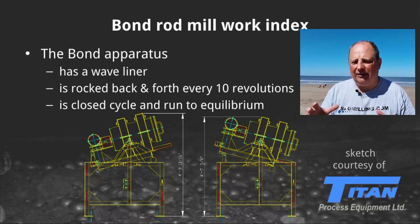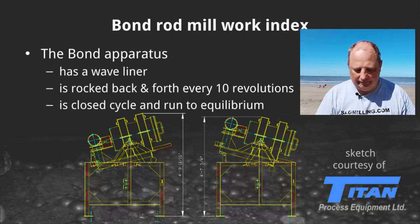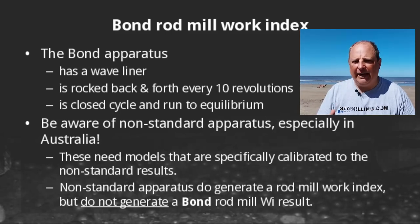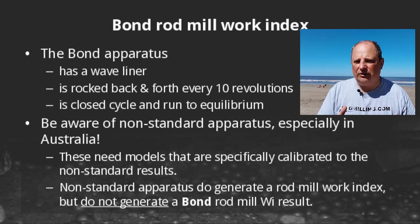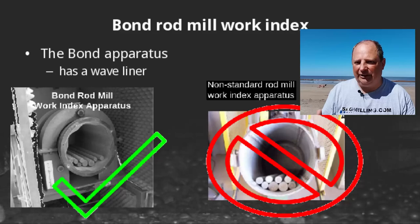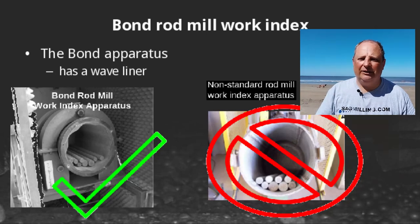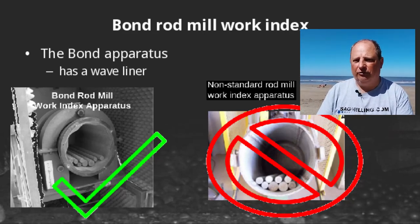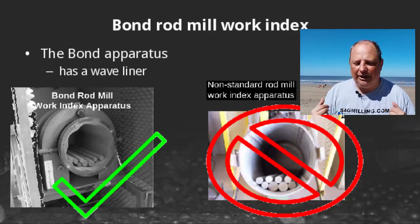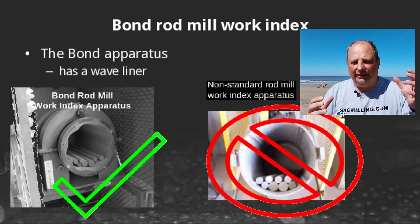The Bond test is also a closed-cycle test run to equilibrium. Be aware that there are non-standard rod mill work index apparatus out there, particularly in Australia. The JK Tech lab in Australia has the correct geometry for a Bond rod mill. Other labs in Australia do not — you can see in the pictures that the one on the left has the proper wave liner while the one on the right has a smooth liner. The one on the right will not give you a Bond rod mill work index. My models are calibrated to the Bond type, so I'm only interested in the Bond type with the wave liner where the rod mill gets rocked every 10 revolutions.